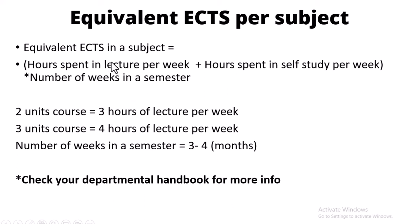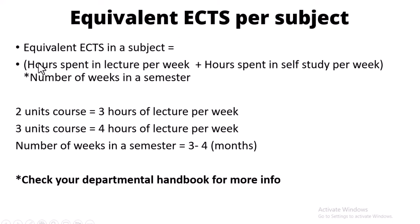When applying to European universities, they want to know how many of your ECTS actually contribute to your field of study — not unrelated courses like, say, education courses taken alongside chemical engineering. To calculate ECTS in a particular subject, you take the number of hours spent in lecture per week, plus the hours spent on self-study per week, then multiply by the number of weeks in a semester.